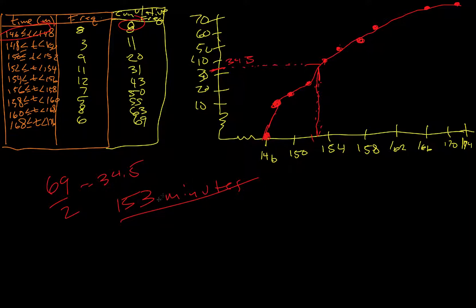Two, we want to use the graph to estimate the number of competitors who finished in less than 155 minutes. So we're going to go to 155, which would be about here and then go over. That's just below 50. So I would say 49 maybe.